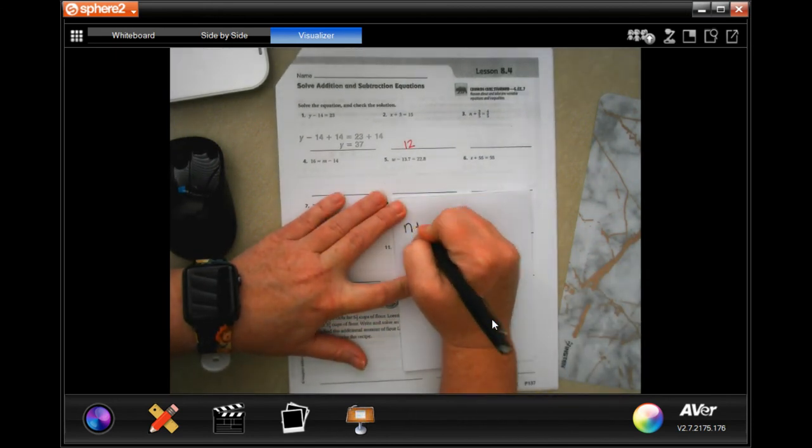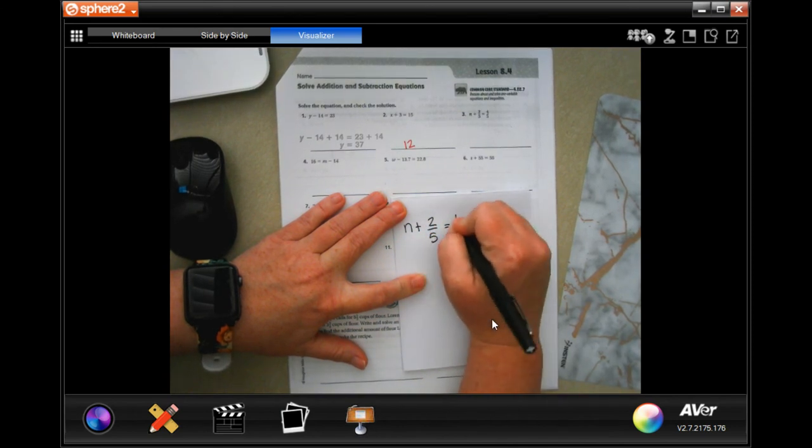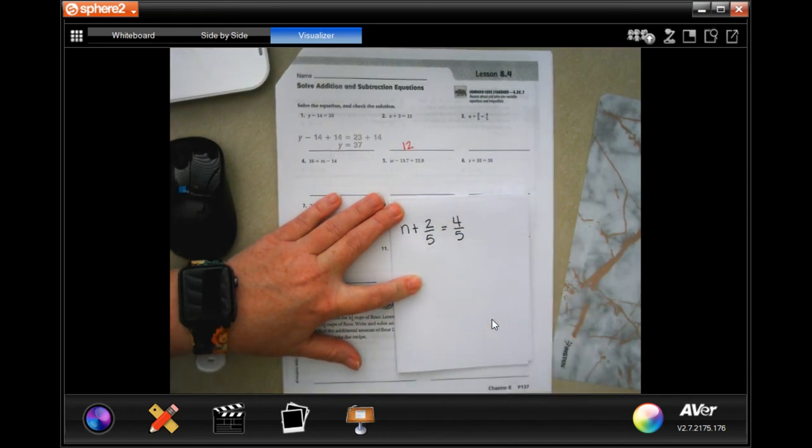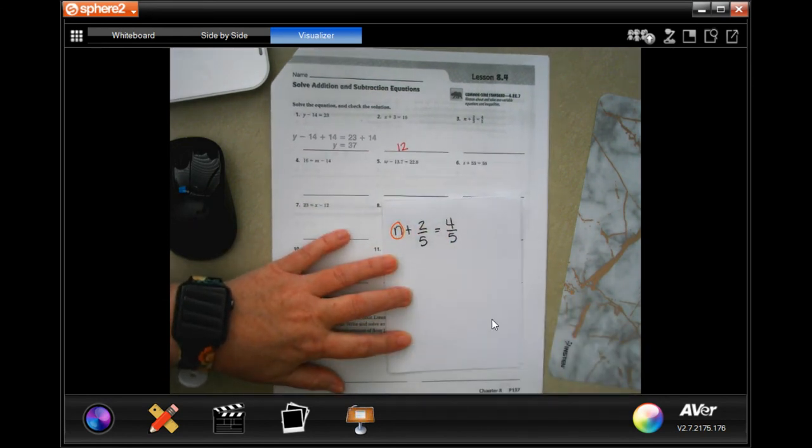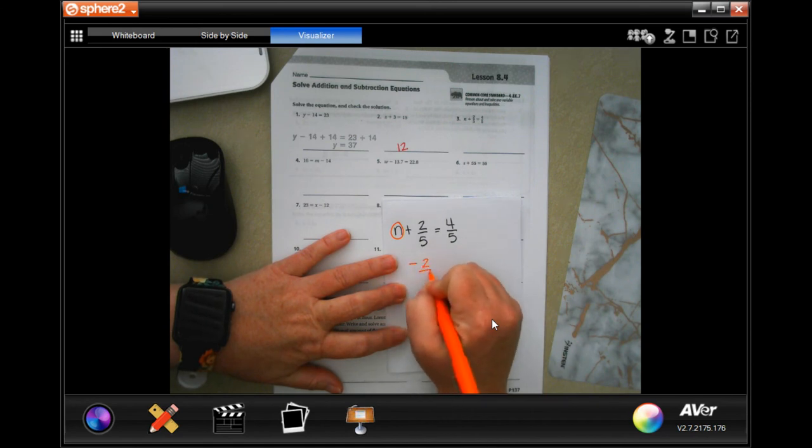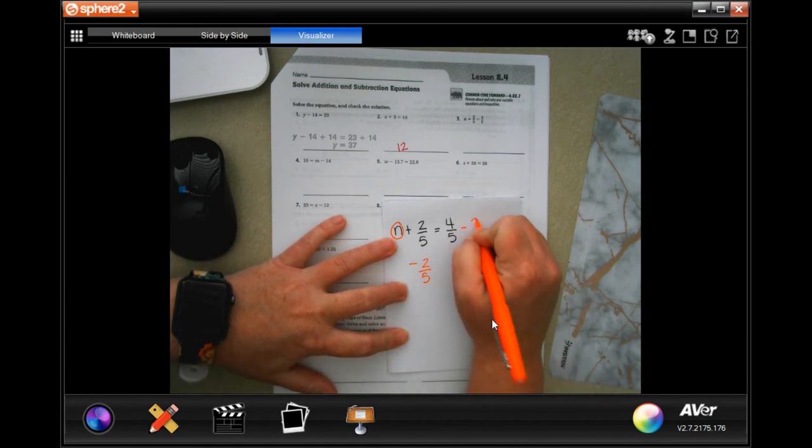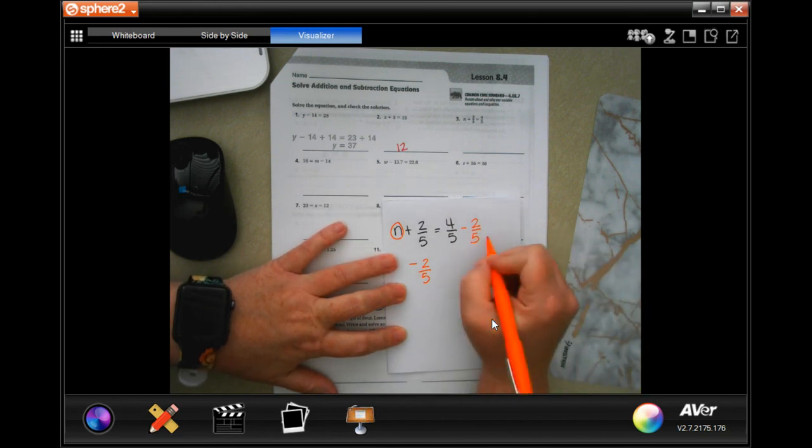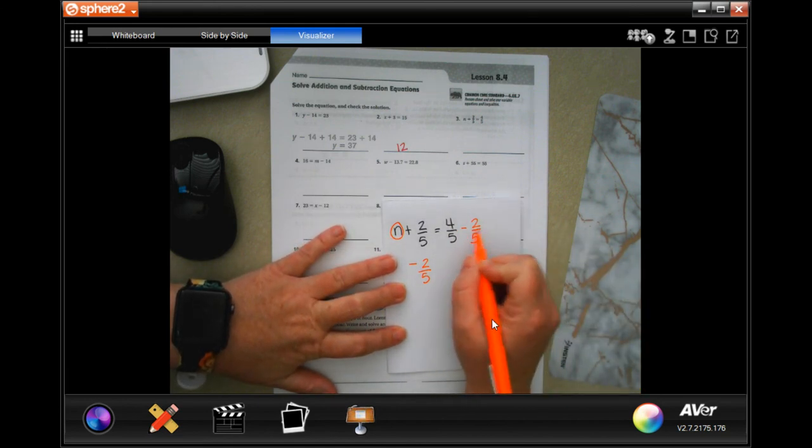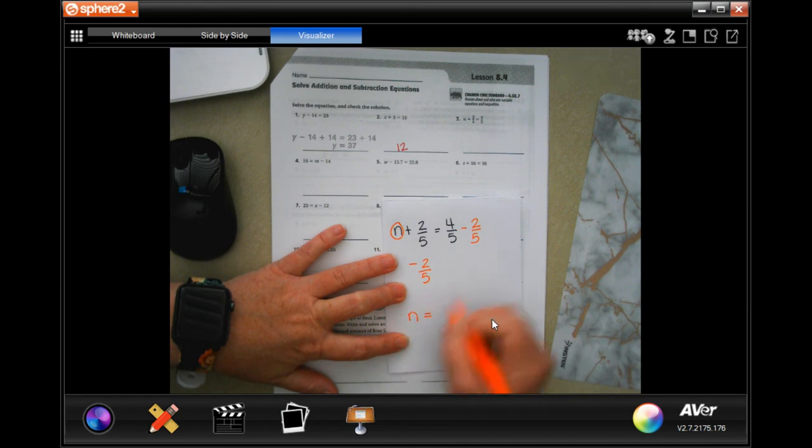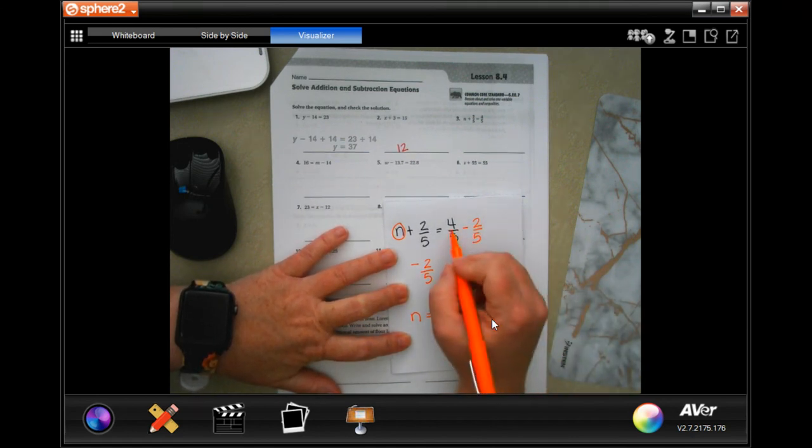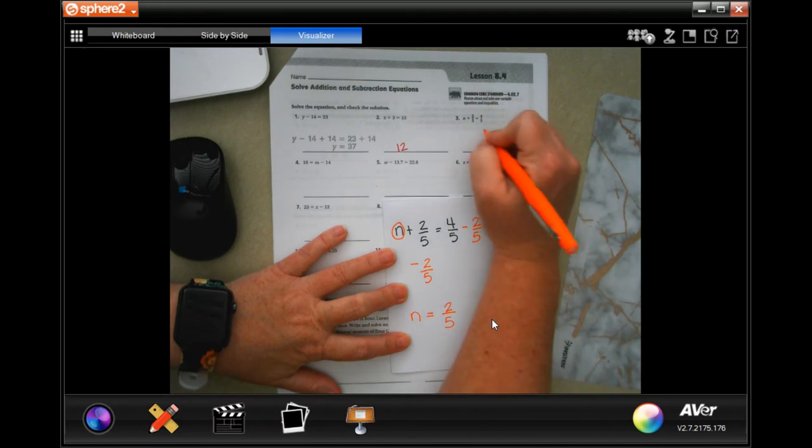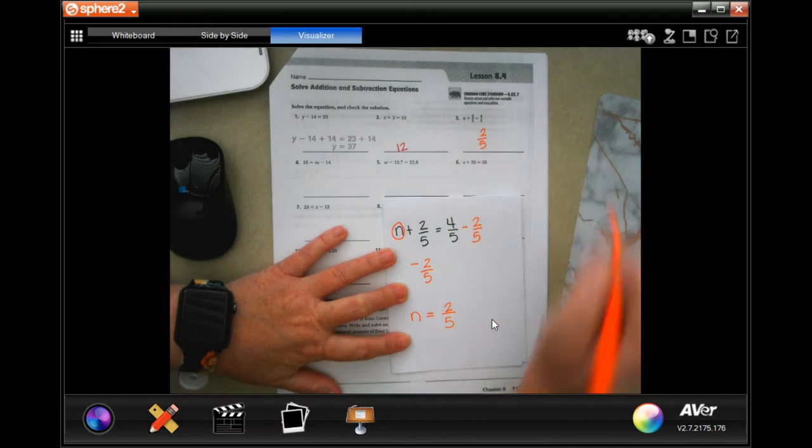n plus 2 fifths equals 4 fifths. I need to get n alone. That means I need to subtract 2 fifths over here and subtract 2 fifths over here. I just wrote it up here because that way it's easier to do and look with n equals. My denominator stays the same as we learned in our fraction segment, and 4 minus 2 is 2.